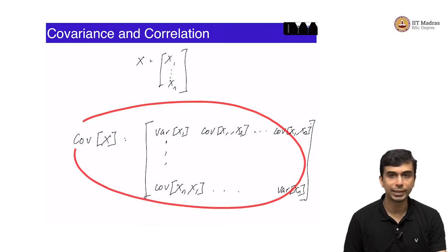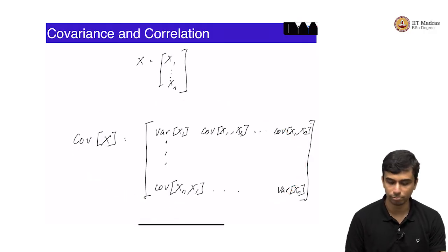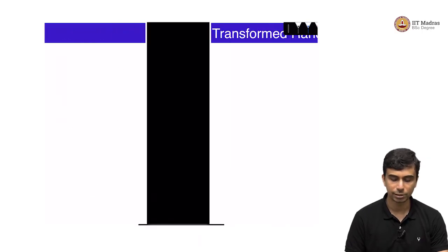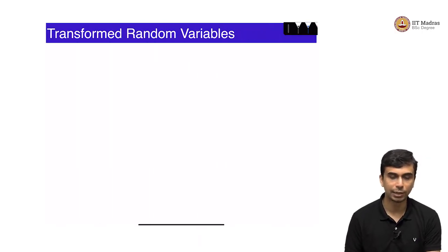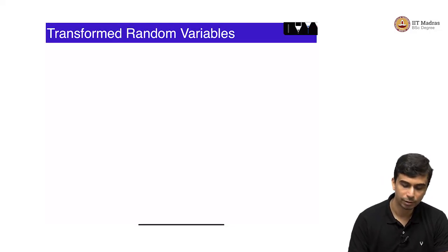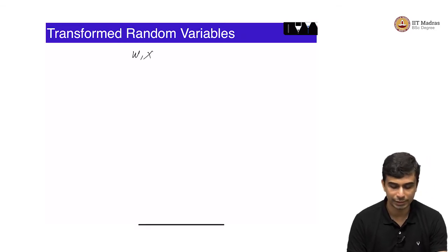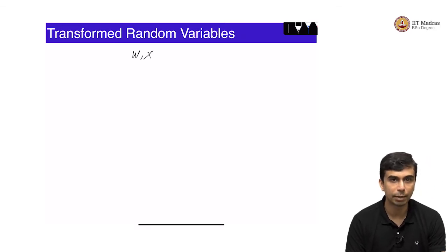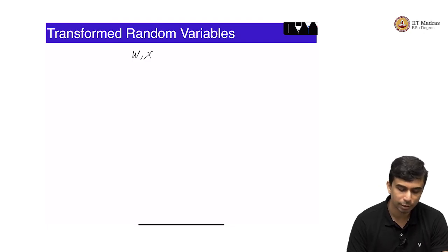With that we have studied the covariance matrix and that finishes the study of covariance. We will move to the next and final topic in multiple random variables which is transformed random variables. Let us say you have two random variables w and x — they are general random variables, they can be independent, dependent, whatever.